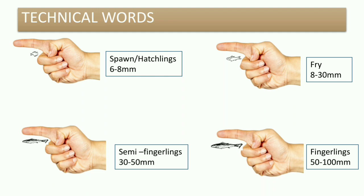Now let's look at the technical terminology used in carp culture. The first stage is spawn or hatchling, which is 6 to 8 mm in size. It is further cultured to fry stage, which is 8 to 30 mm. After fry comes semi-fingerling, which is 30 to 50 mm, and then fingerling, which is 50 to 100 mm.